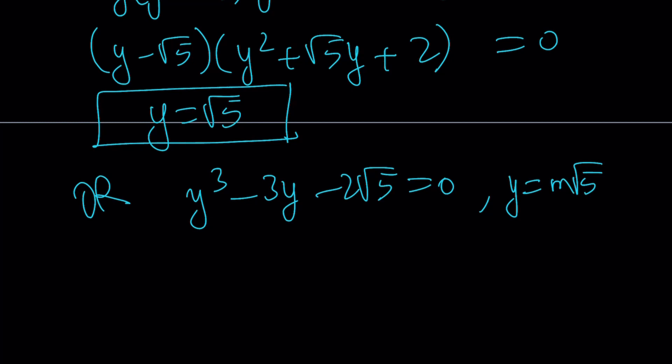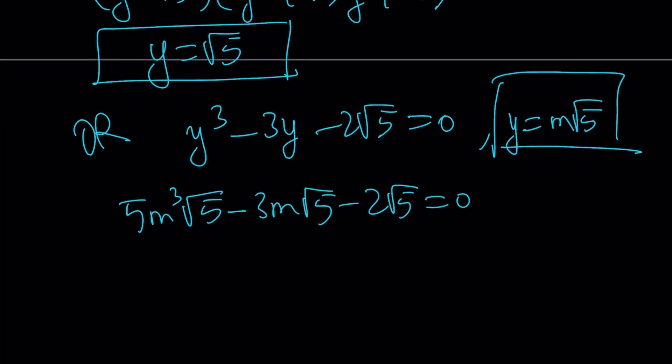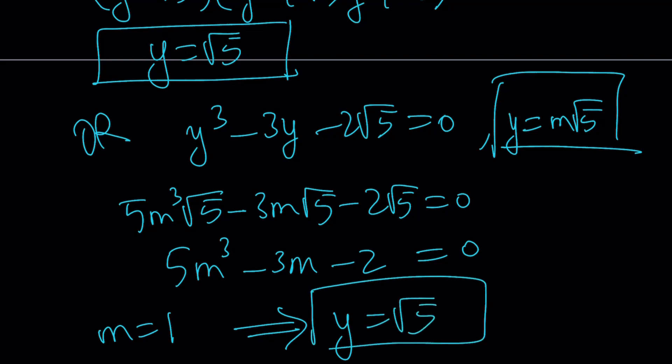If you do that, you're going to get the following: 5 m cubed root 5, this is my formula, and then minus 3 m root 5 minus 2 root 5 is equal to 0. You can divide both sides by root 5, and you'll get a nice cubic. And this cubic also has a nice solution. m equals 1 from here because of the sum of the coefficients. And that implies y equals square root of 5.